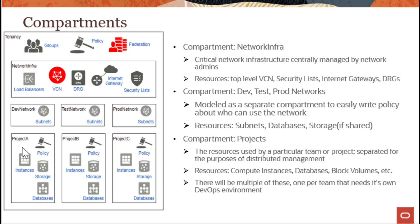The third level covers specific projects. Here we have three compartments called Project A, Project B, and Project C, where users have created different resources — compute instances, storage, and databases — with policies governing access to each. As you can see, this can expand further: as more groups within your organization want to use OCI resources, you can replicate a similar structure for those teams as well.